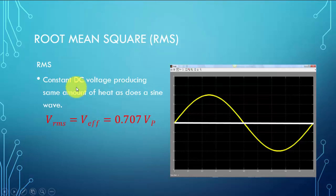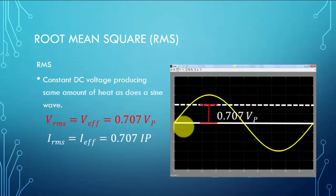Again, it's a constant DC voltage. We have a similar definition for the current: IRMS equals Ieff equals 0.707 IP. For the vertical voltage case, we have 0.707 VP. Again, this is a constant DC voltage, and this produces the same amount of heat as does this sine wave.